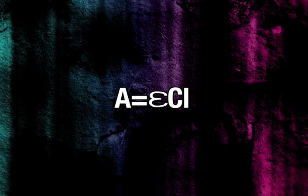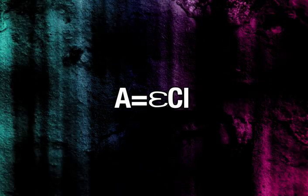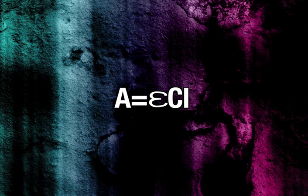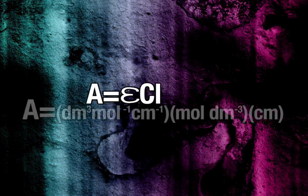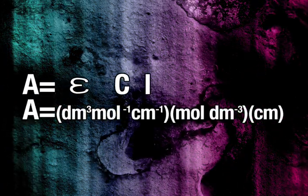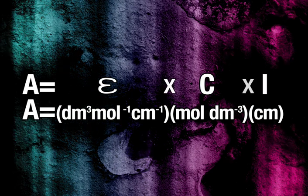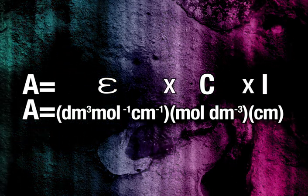The Beer-Lambert law states that absorbance is proportional to concentration and path length, where A is absorbance, epsilon is the molar extinction coefficient, C is the concentration, and L is the path length.